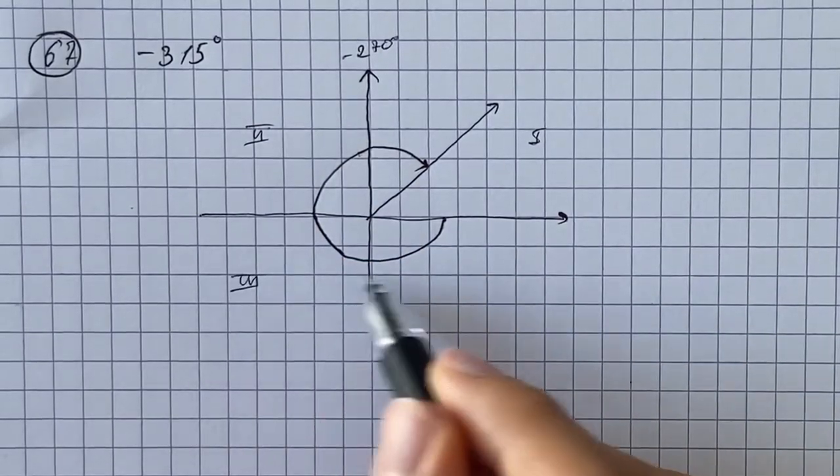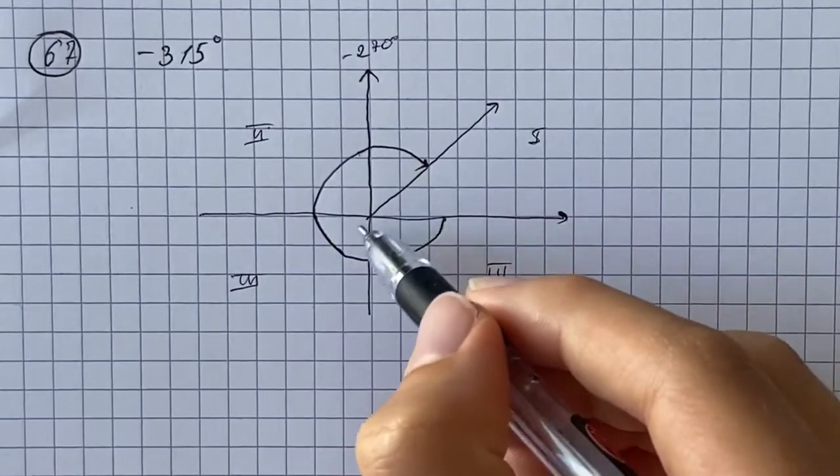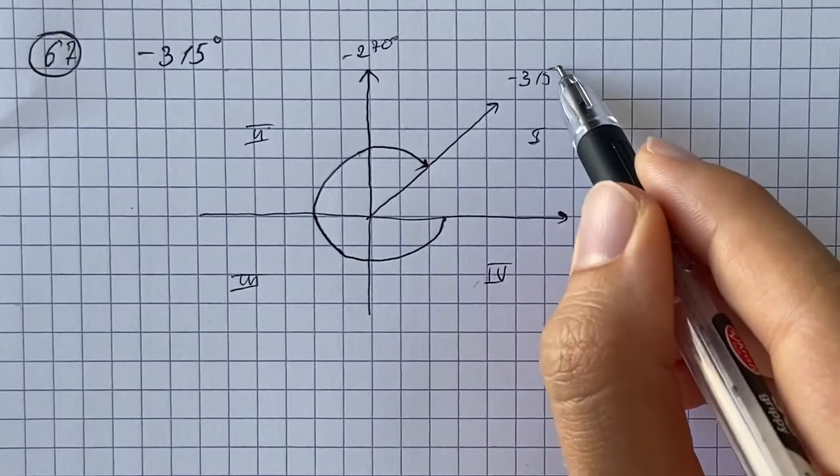First, second, third, and fourth. So that's our angle of negative 315 degrees.